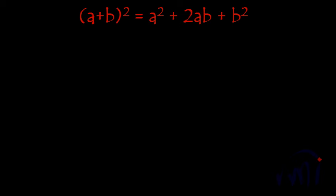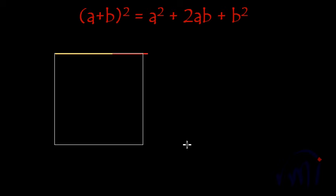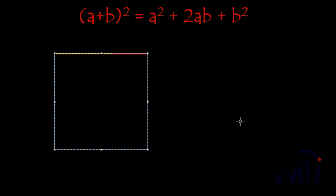So let me take a line. Let this be 'a', and since it is the square of a plus b, I am going to extend it by b. So let this line be b. We have to find a plus b whole square, so let me make a square over here. This is a square whose one side is equal to a plus b, because from here till here this yellow line was equal to a, and from here till here this red line was equal to b. So this is a square whose one side is equal to a plus b.